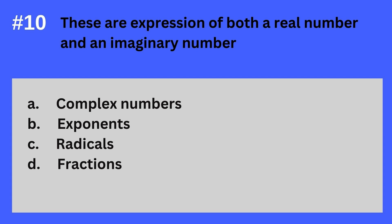Question 10. These are expressions of both a real number and an imaginary number. A. Complex numbers. B. Exponents. C. Radicals. D. Fractions. The answer? It's A. Complex numbers. These are expressions of both a real number and an imaginary number — Complex numbers.